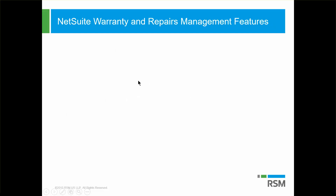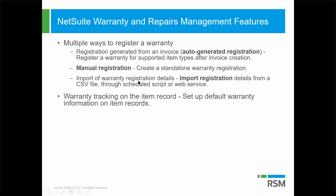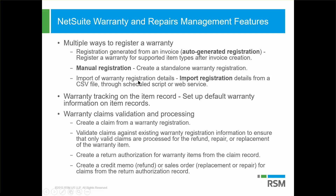Some of the main features of the warranty repairs management bundle are the ability to provide multiple ways to register a warranty. The warranty registration record is a new record supplied by this bundle and it can be auto-generated from an invoice, manually generated, or generated via import. It also provides the ability to set up default settings on each item record to define warranty information such as warranty term, and it provides new functionality around claims validation and processing.